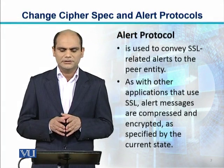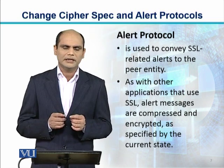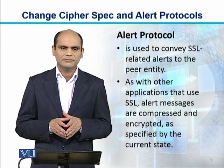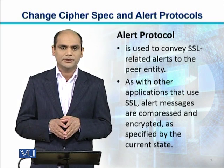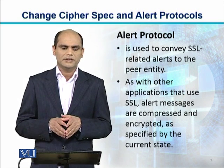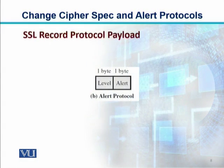Yeh jo Alert Protocol hai, this is used to convey SSL record alerts to the peer entity. Toh peer entity ek dusre ko alerts kaise provide kar sakte hain? Through this Alert Protocol. So, as with other applications that use SSL, alert messages are compressed and encrypted as specified by the current state. Toh agar aap SSL record protocol ka jo payload hai wo dekhen, toh Alert Protocol ke andar doh fields hain — level aur alert — each is of one byte. And this will work as a payload for the SSL record protocol.